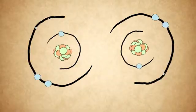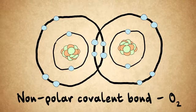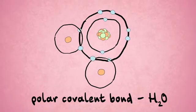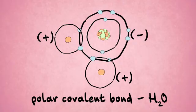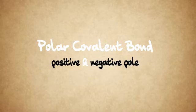Sometimes electrons are shared equally within a covalent bond, like with O2 — that's called a nonpolar covalent bond. But often one of the participants is more greedy. In water, for example, the oxygen molecule sucks the electrons in, and they spend more time around the oxygen than around the hydrogens. This creates a slight positive charge around the hydrogens and a slight negative charge around the oxygen. When something has a charge, we say that it's polar — it has a positive and negative pole. So this is a polar covalent bond.